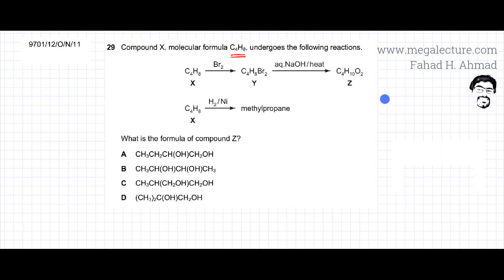Alkenes have a general formula of, if I take C4H8, the general formula for alkenes is CnH2n. So the molecular formula of this particular hydrocarbon is similar to an alkene, it's n and H would be 2n, it's 1 ratio 2, over here it's also 1 ratio 2.